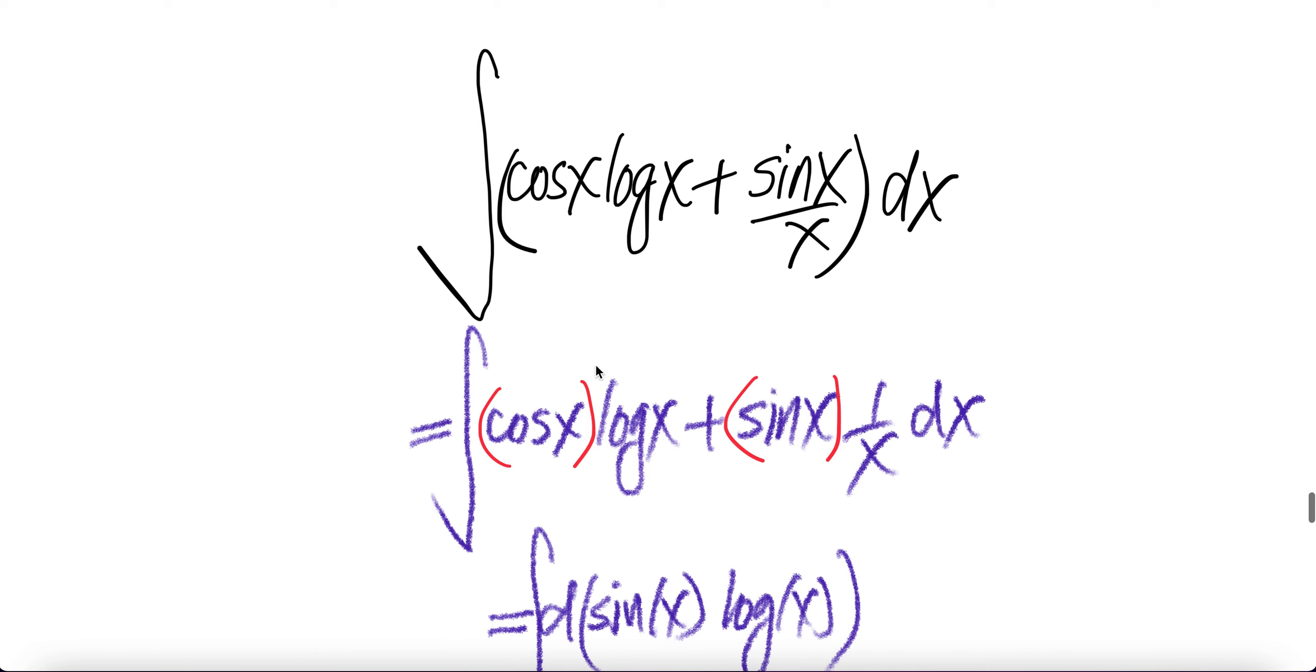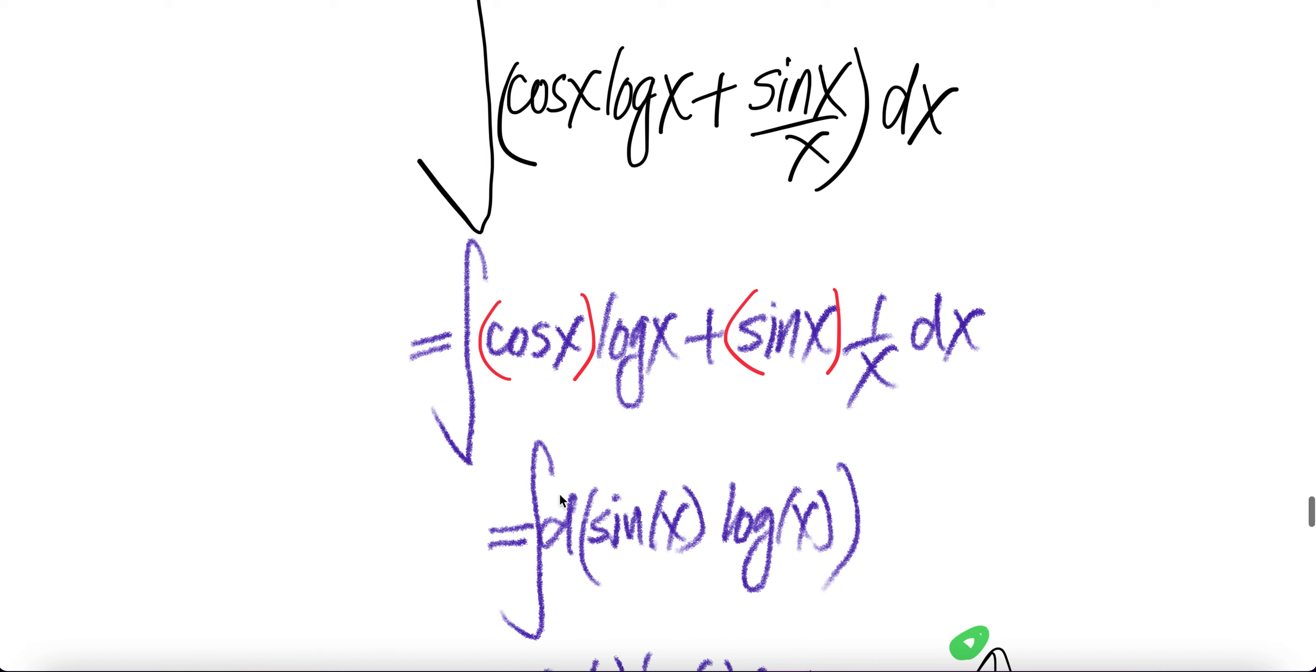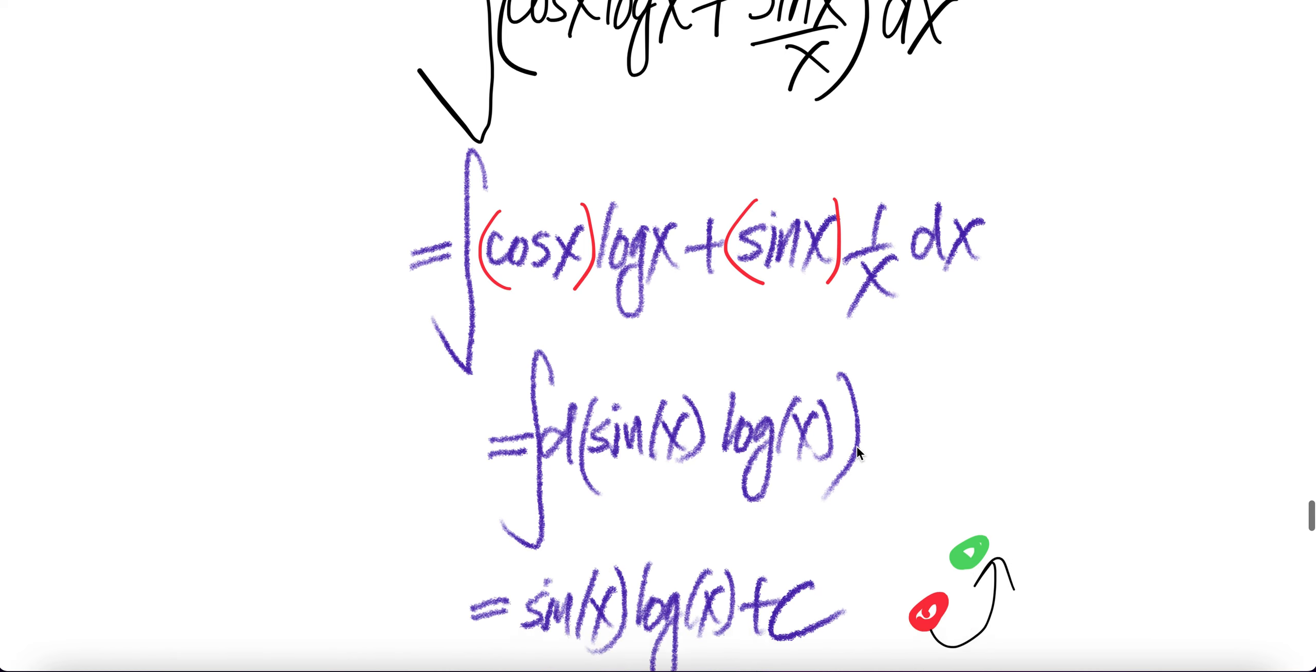Let us write brackets here. Notice that this is nothing more than the derivative of sin x times log x. For the product of two functions, we apply the product rule: the derivative is cos x times log x plus sin x times 1/x.